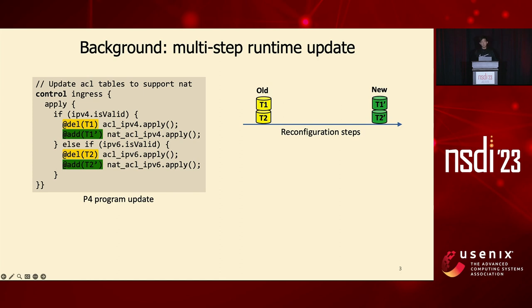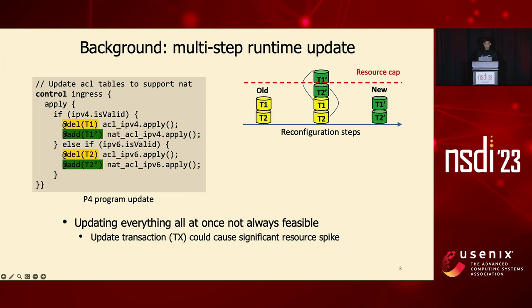The most naive update plan is just to update everything all at once. However, the problem is that this will invoke a huge resource spike during the update, and in many cases it will break the resource cap of the device, causing the update to fail. This means updating everything all at once is not always feasible.